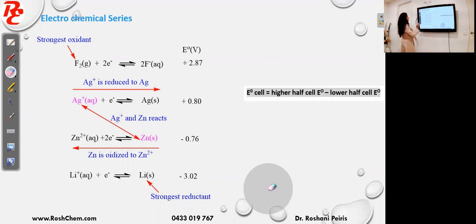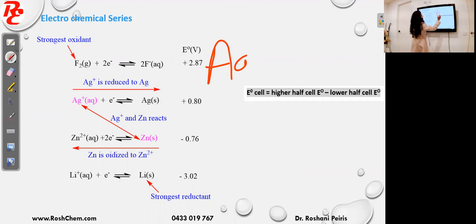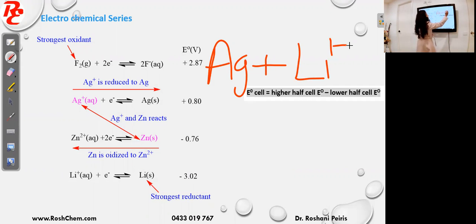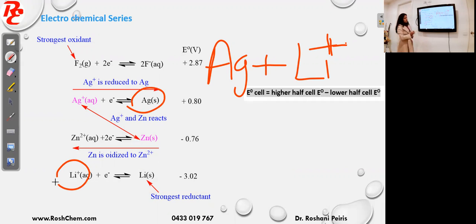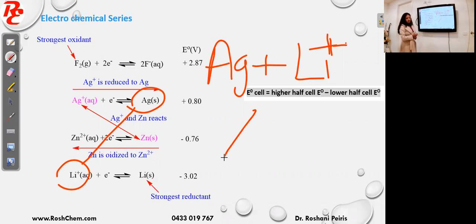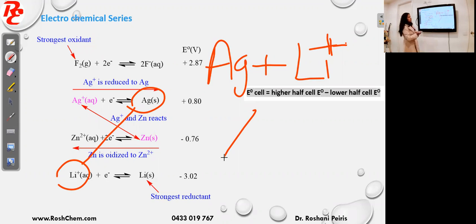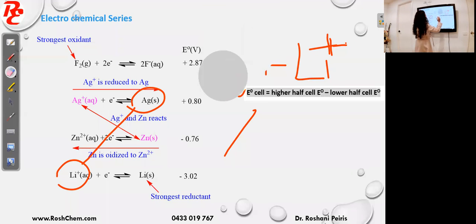Now consider whether Ag and Li⁺ react together. When you join Ag and Li⁺ on the electrochemical series with a line, it does not form a negative gradient — so they cannot react. For a spontaneous reaction the oxidant must be from the top and the reductant from the bottom. In this case Ag is a reductant but it is at the top, so this reaction is non-spontaneous.